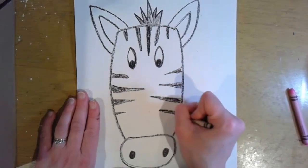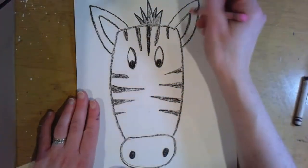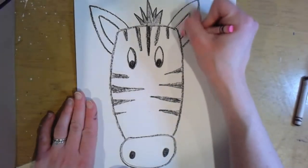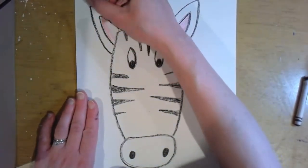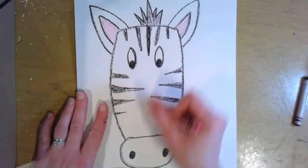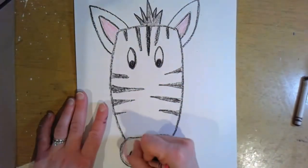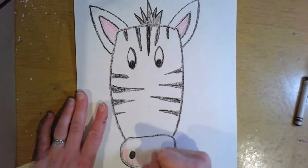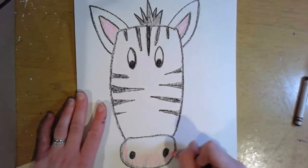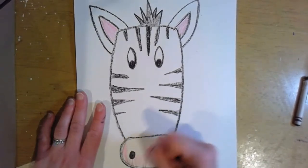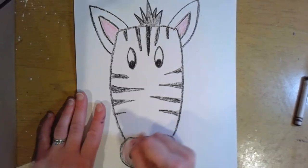And I'm also going to color the ears and the snout. Now you can color this how you want to color it. It does not have to be the way that I am coloring it, although typically zebras are pretty much black and white most of the time. But you are the artist, so you can make this how you want to make it.